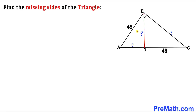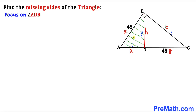Let's label this triangle. I'll call side AB lowercase a, side BC lowercase b, and the altitude BD as H. I'm going to call side length AD as X and CD as Y. Our task is to calculate the values of X, H, and b.